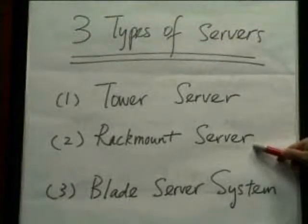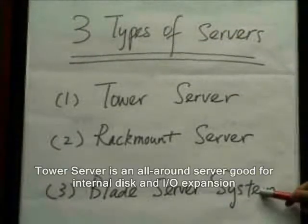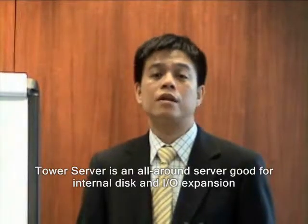Let's take a look at different types of server first. Generally, we can divide the server into three types: Tau Server, Red Mount Server, and Blade Server System. For the Tau Server, it is an all-round server and is good for internal disk and I-O card expansion. Since there are not too many restrictions on the installation environment, you can put the Tau Server in a data center or in the office area.